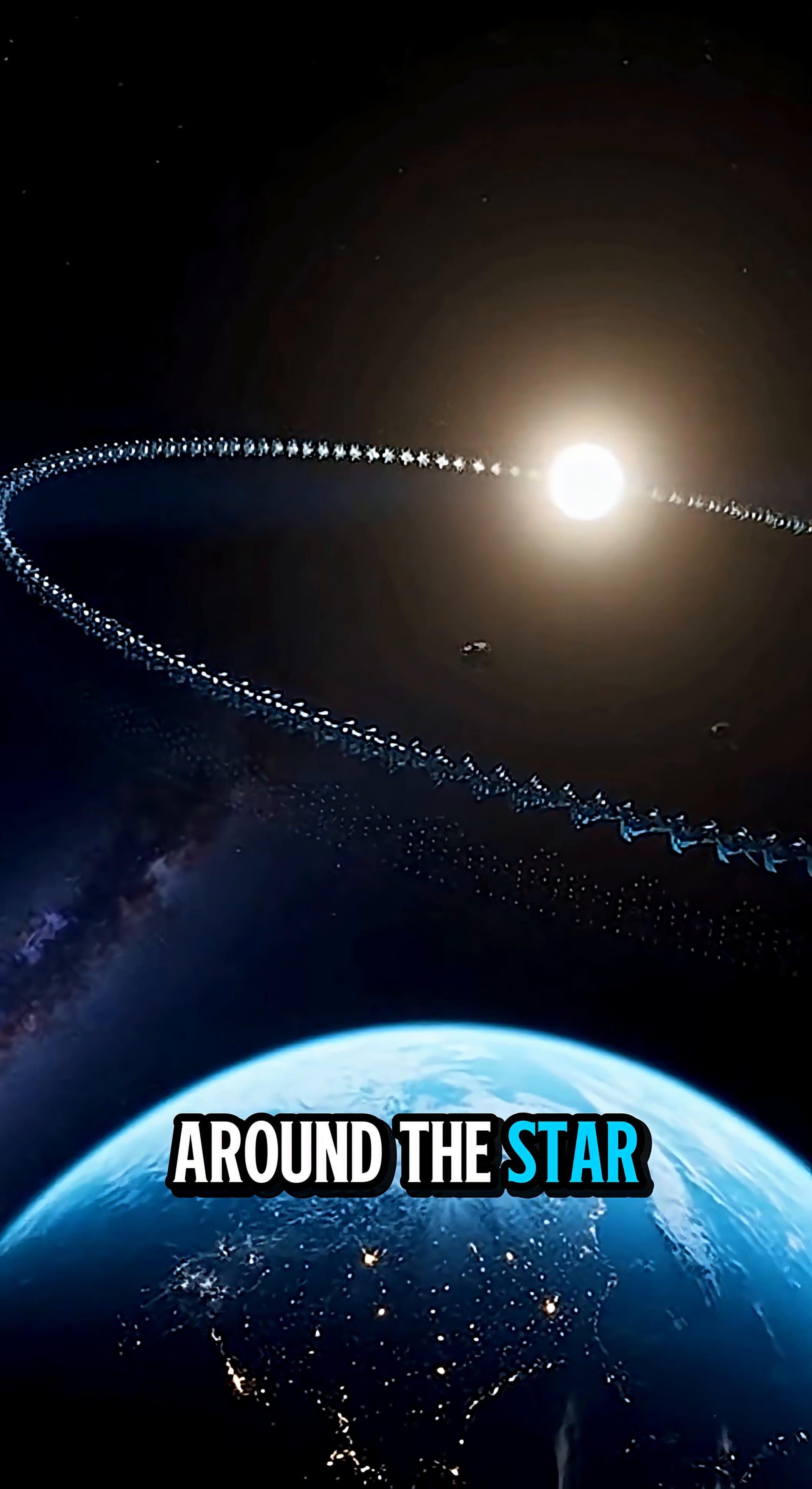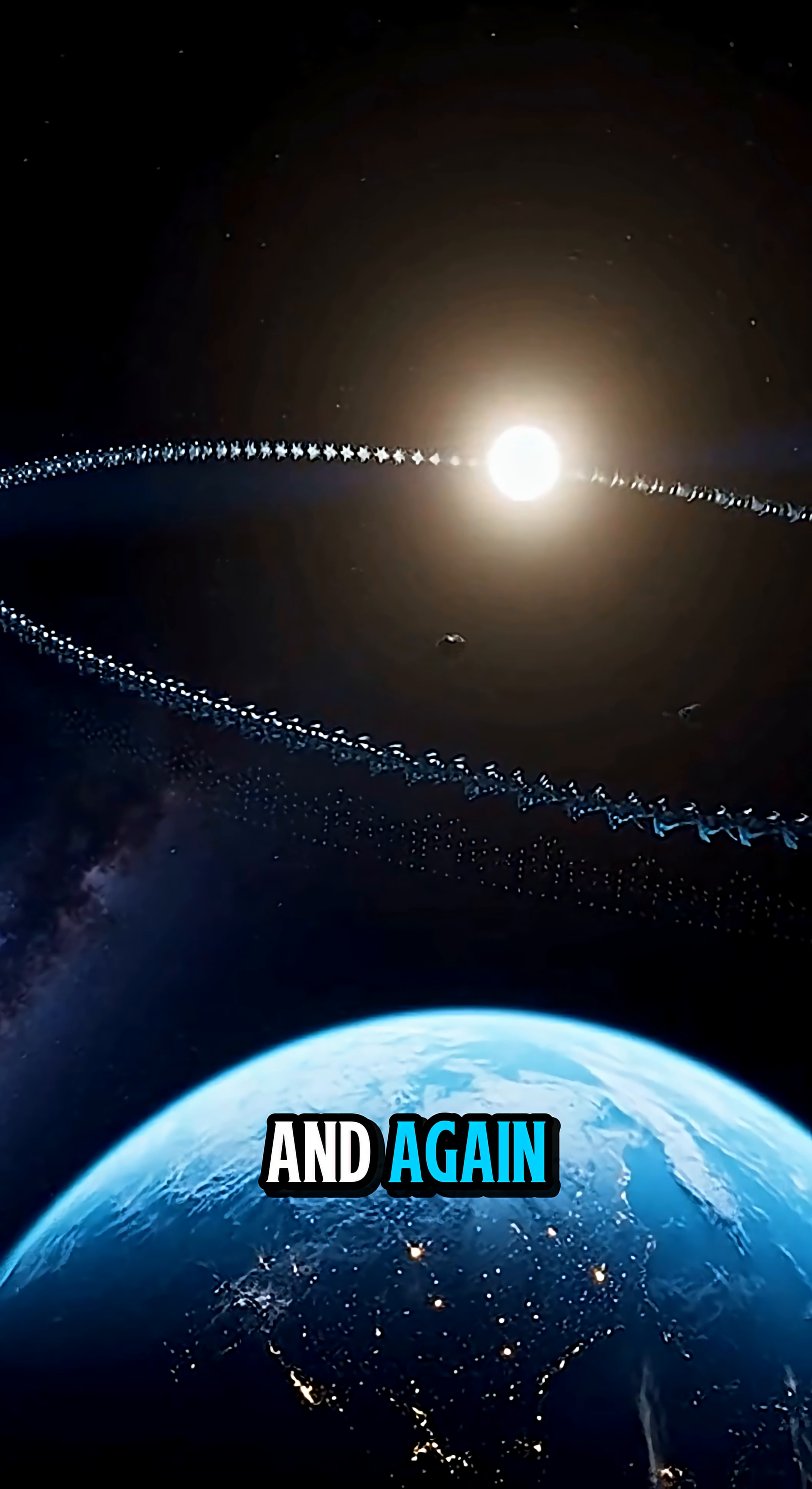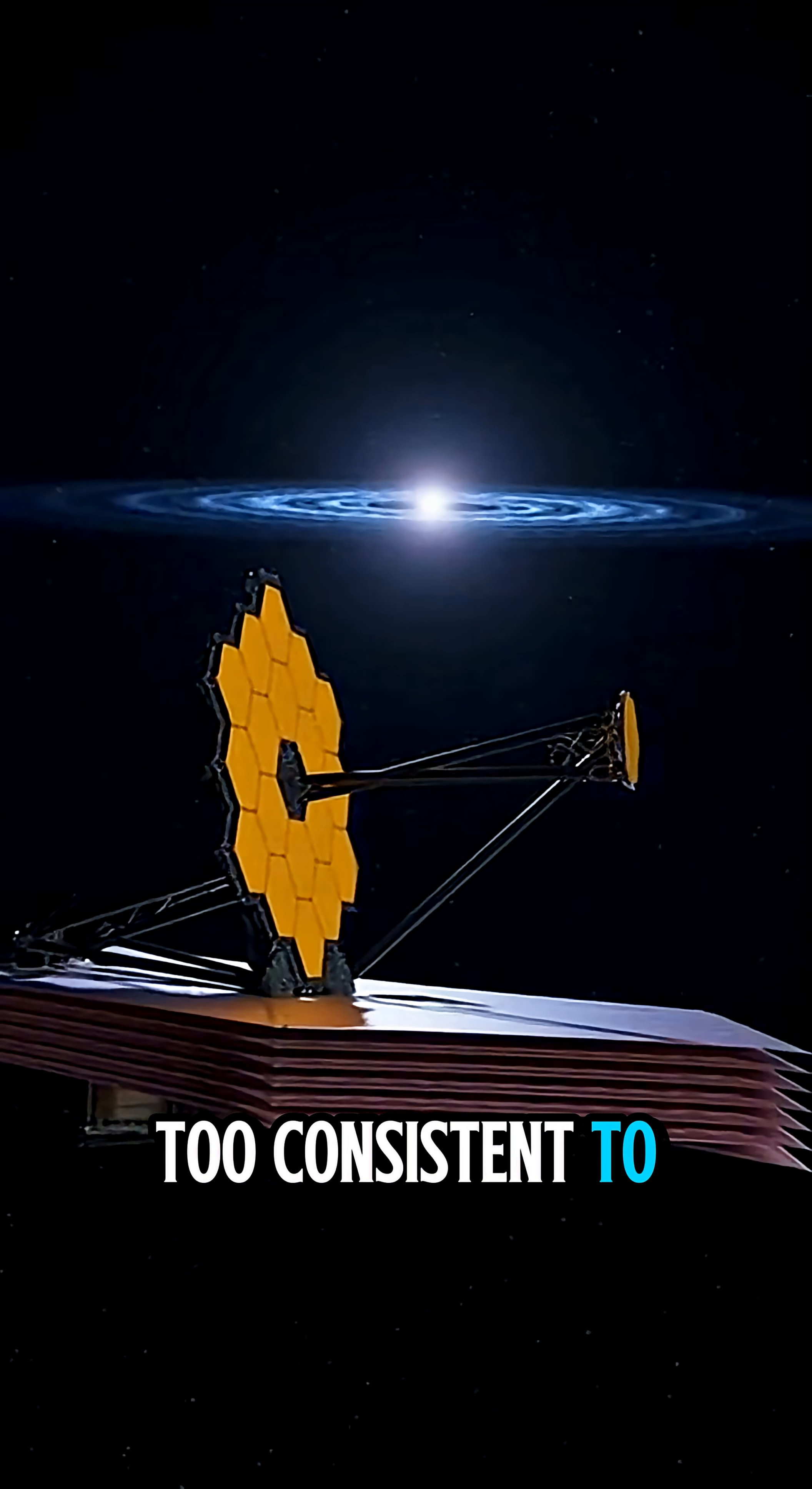Around the star, a faint structured arc appears again and again, too organized to be random dust, too consistent to be a glitch.